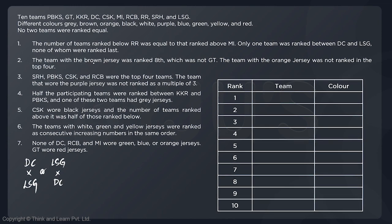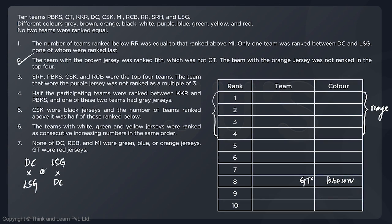Statement two: the team with the brown jersey was ranked eighth, which was not GT — so rank eight gets the color brown, and GT is not at rank eight. The orange jersey was not ranked in the top four, so we won't place orange in ranks one through four. Statement three: SRH, PBKS, CSK, and RCB were the top four teams, and the team with the purple jersey was not ranked as a multiple of three, so purple cannot be at ranks three, six, or nine.